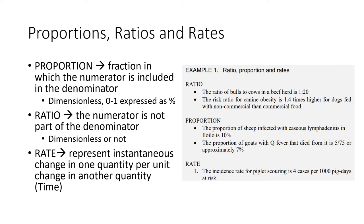In epidemiology in general, you have three modes or three types of measuring health or disease eventualities: proportion, ratio, and rate. For your proportion, it is basically a fraction in which the numerator is included in the denominator. It is said to be dimensionless — it could be a decimal number from zero to one, but is usually expressed as a percentage.